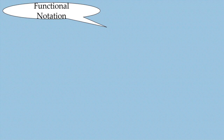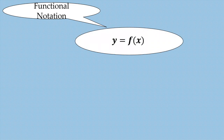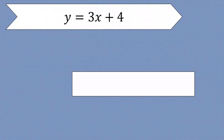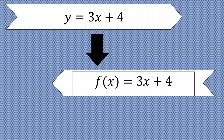Let's proceed to functional notation. How are we going to present a particular scenario using functional notation? Y is equal to f of x — meaning y is a function of x. So we can use y in exchange for f of x. For example, y equals 3x plus 4. Using function notation, we replace y with f of x, so it becomes f(x) = 3x + 4. We can use either y or f(x) — both are still functions.